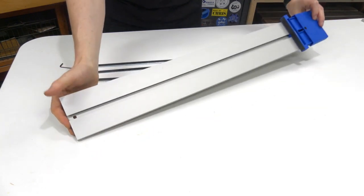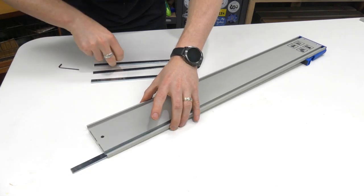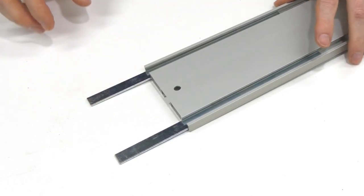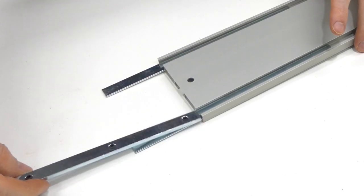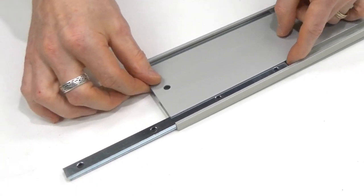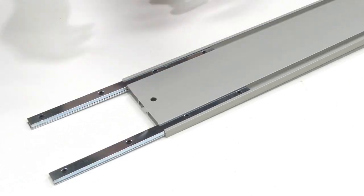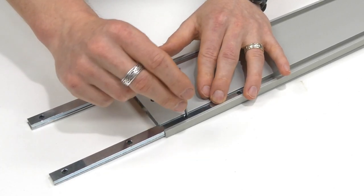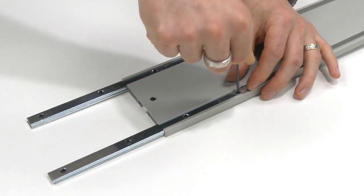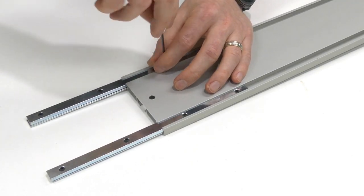And repeat for the second one. Grab the track section that has the clamp on it. Take the bottom flat bars and insert those and then put one of your top bars about halfway and line them up. Now tighten these down a little bit but not all the way. Just enough so that they're not going to fall out.